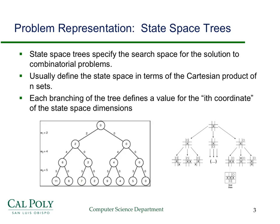The key thing when we work through the examples to pay attention to is what's called the state space tree. For these problems, which are basically search problems, we want to be able to organize the search in a rigorous fashion that's going to allow us to efficiently search through to try to find a solution. Usually the state space is defined in terms of a Cartesian product of sets. We're going to represent that as a branching tree, where each coordinate represents one dimension or one choice for some aspect of the possible solutions.